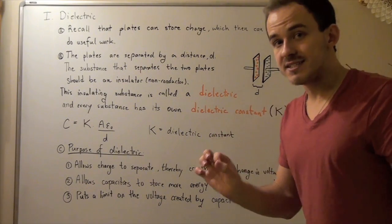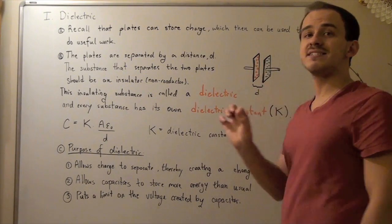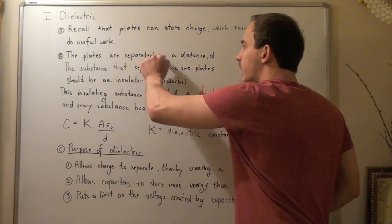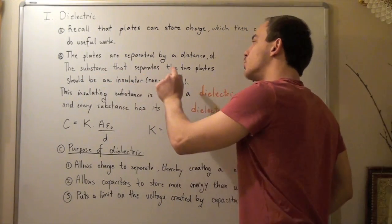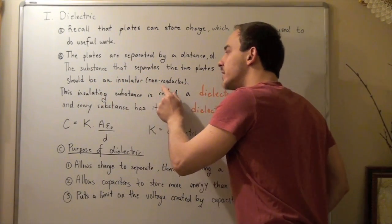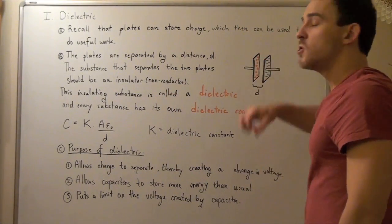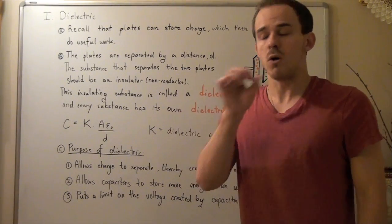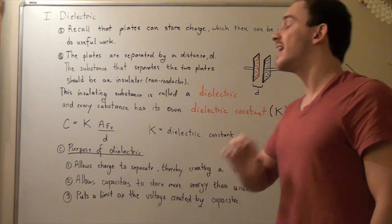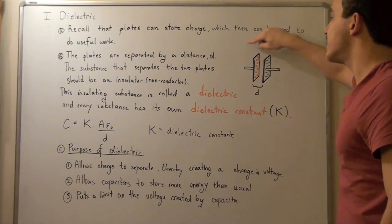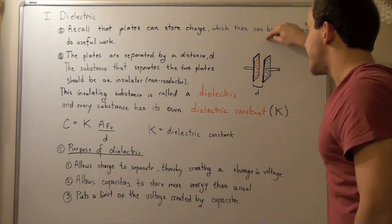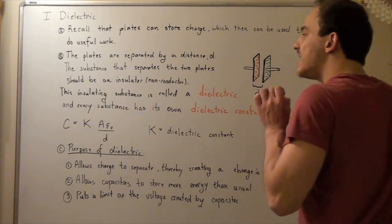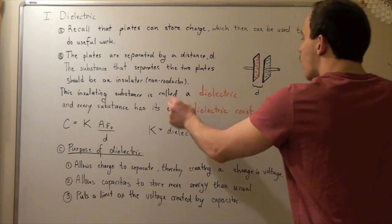As long as the substance separating these plates is an insulator — a non-conductor. The substance that separates the two plates should be an insulator because a conductor allows electrons to flow, while a non-conductor does not. If we place a conductor, electrons would be able to easily flow from one side to the other. So we need to put an insulator, and this insulating substance is called a dielectric.